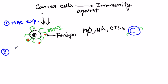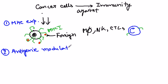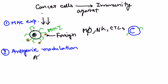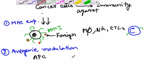The second type of modification by cancerous cells is called antigenic modulation. This involves MHC class 2, which is relevant to antigen presenting cells or APCs. Among these antigen presenting cells we have macrophages, which are professionally designed to present antigens outside the cell using MHC class 2 molecules.